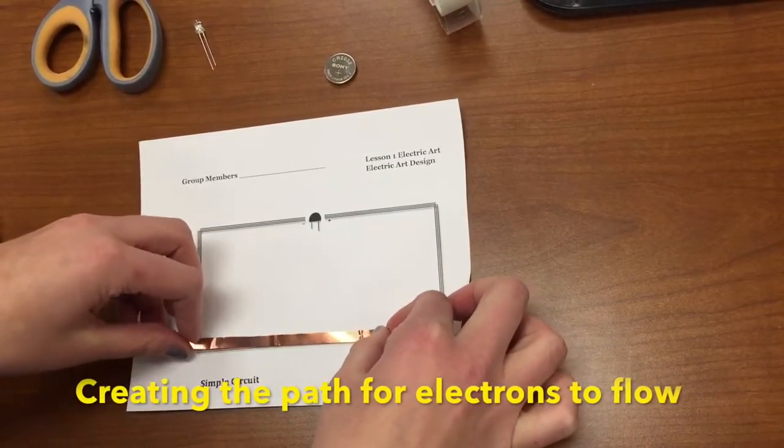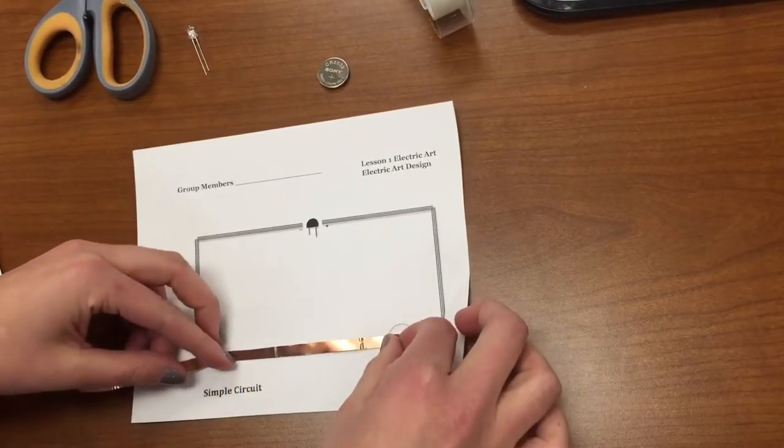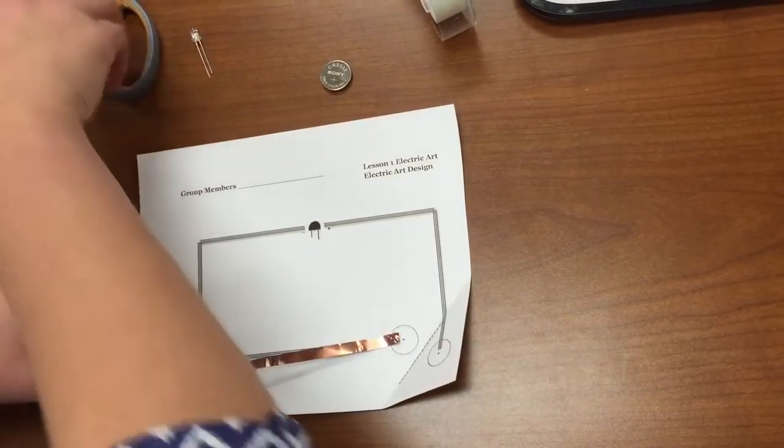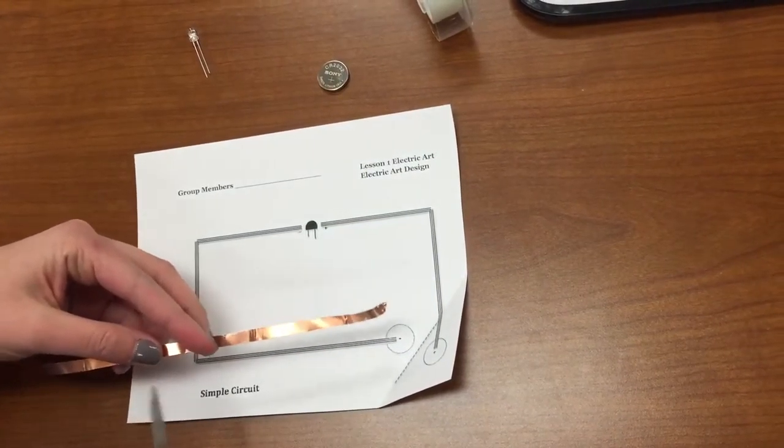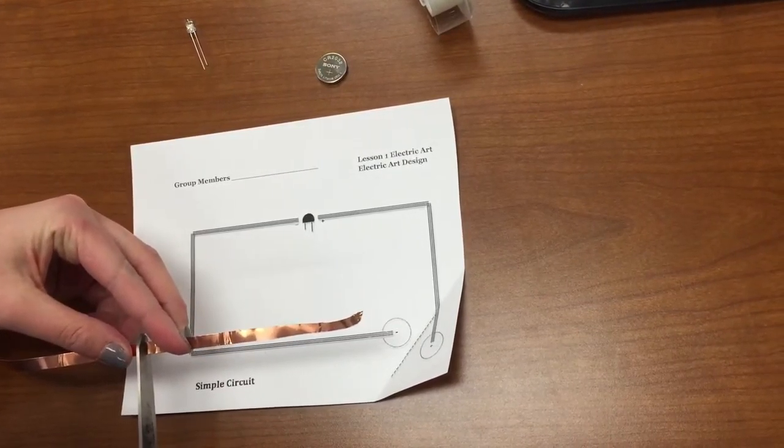First thing you're going to do is cut. We're going to create the path that the electrons are going to flow on. Make sure you always use scissors instead of ripping it because by ripping it you can get a copper tape cut which hurts really badly.